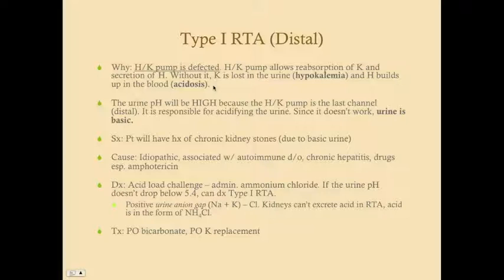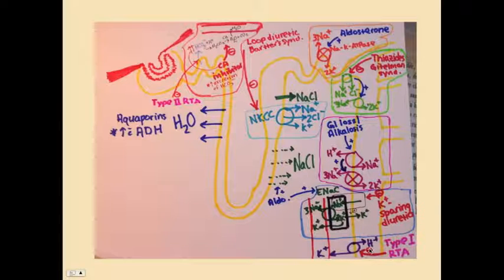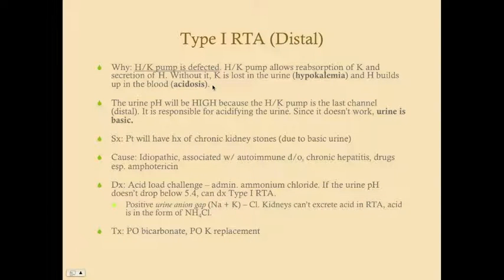Why is the urine basic in type 1 RTA? You might think that with acidemia the urine should also be acidic. In type 1 RTA, you can't pull hydrogen into the urine from the blood, so because you can't acidify the urine, it becomes basic. So you have acidemia with basic urine. And because you can't pull potassium out of the urine into the blood, you have hypokalemia. In summary: hypokalemia, acidosis, and basic urine — that combination helps diagnose type 1 RTA.